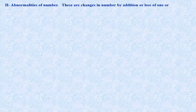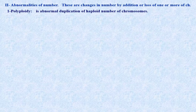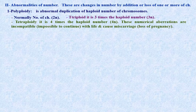Abnormalities of number: these are changes in chromosome number by addition or loss of one or more chromosomes. Polyploidy is abnormal duplication of the haploid number. Normally somatic cells are diploid (2n). In triploidy it is 3n; in tetraploidy it is 4n. These numerical aberrations are incompatible with life and cause miscarriage.